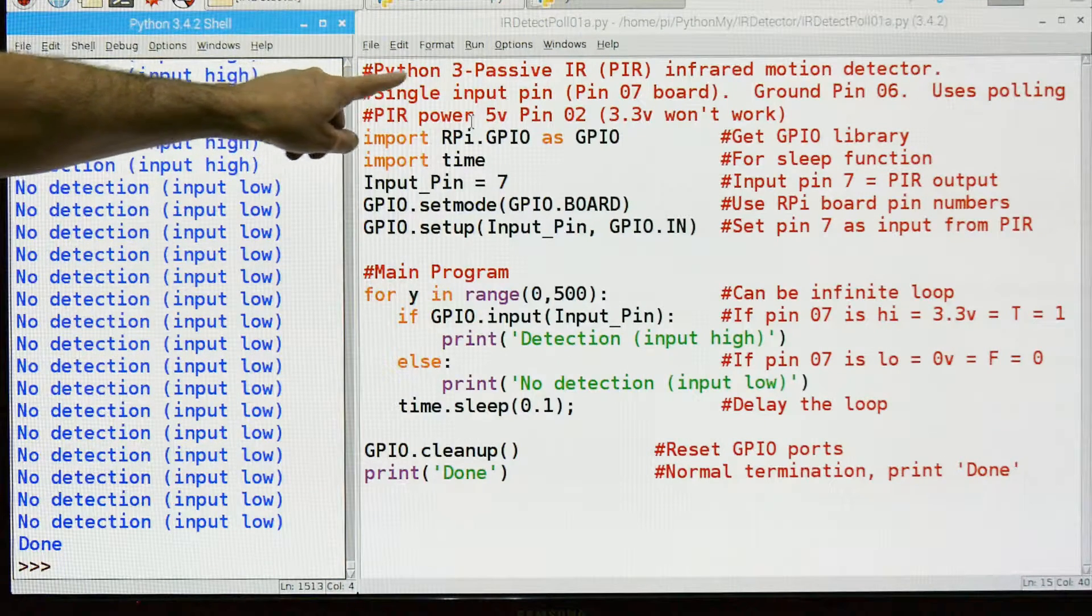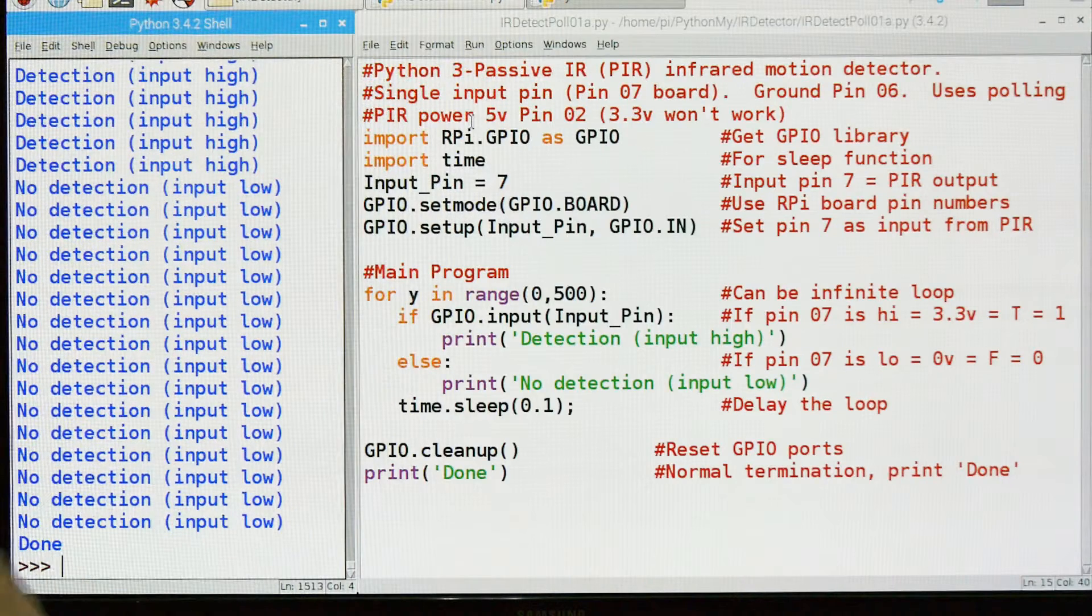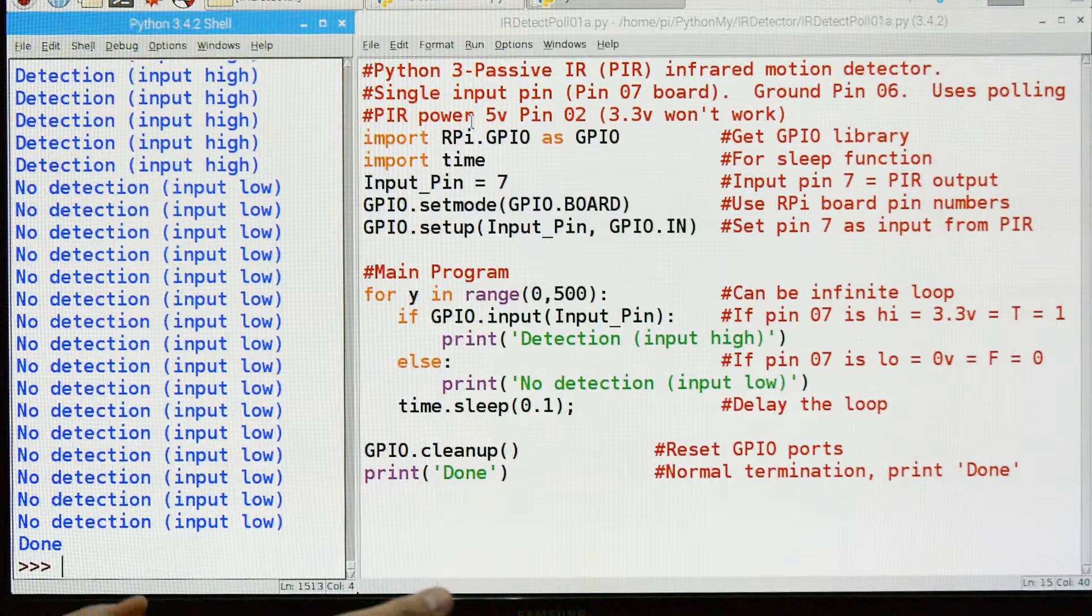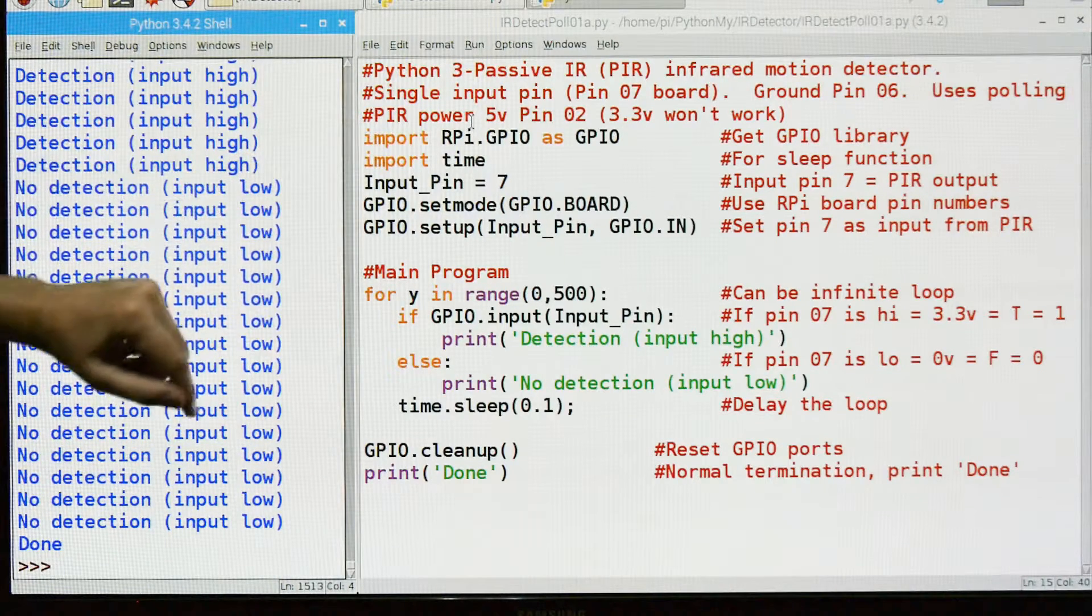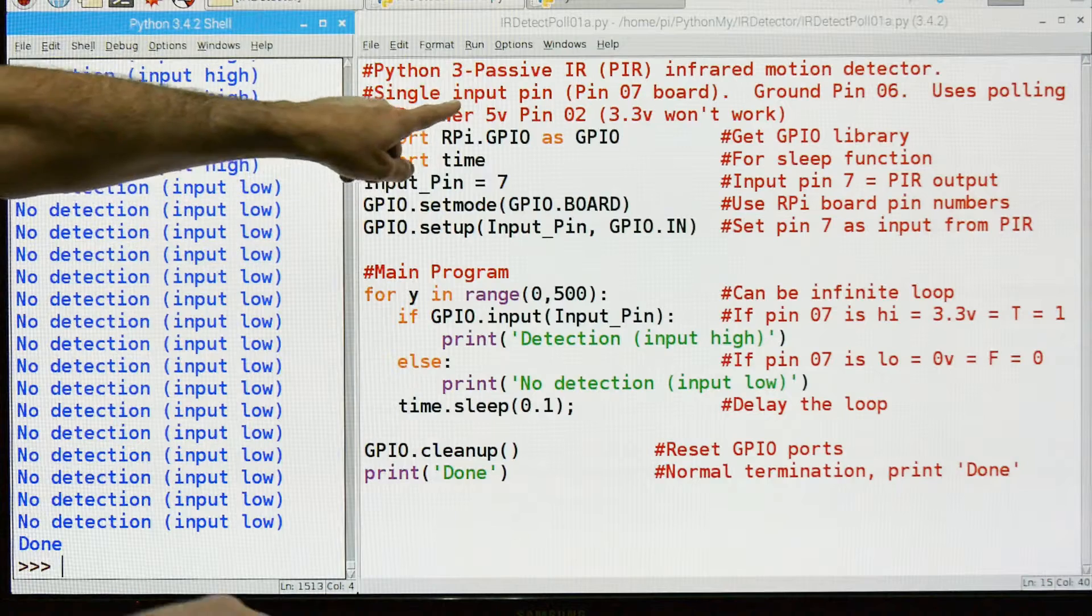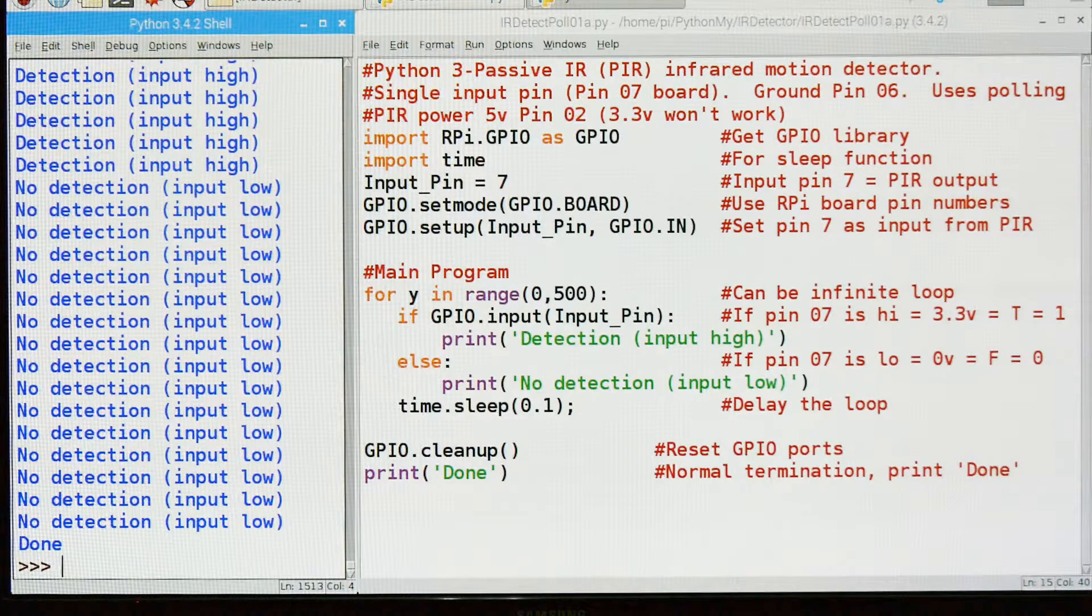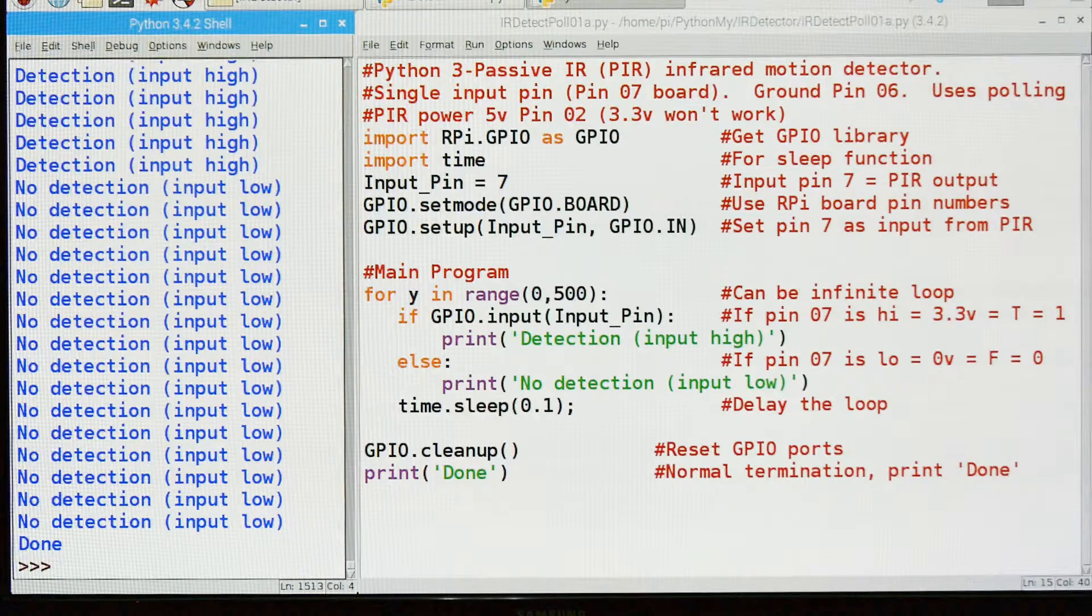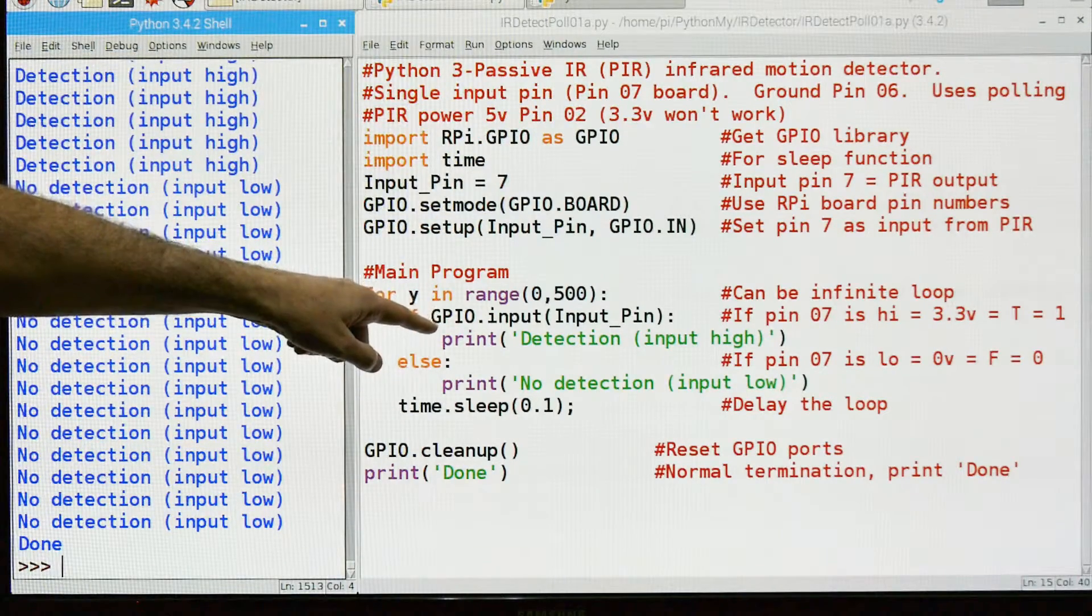We're using Python 3. We're using a PIR, P-I-R, passive infrared. That means it's not sending out any light. It's just detecting the heat from a body, from an animal, a person, what have you. And we're using a single input pin. That's pin 7 on the board. And we're using a ground pin 6.